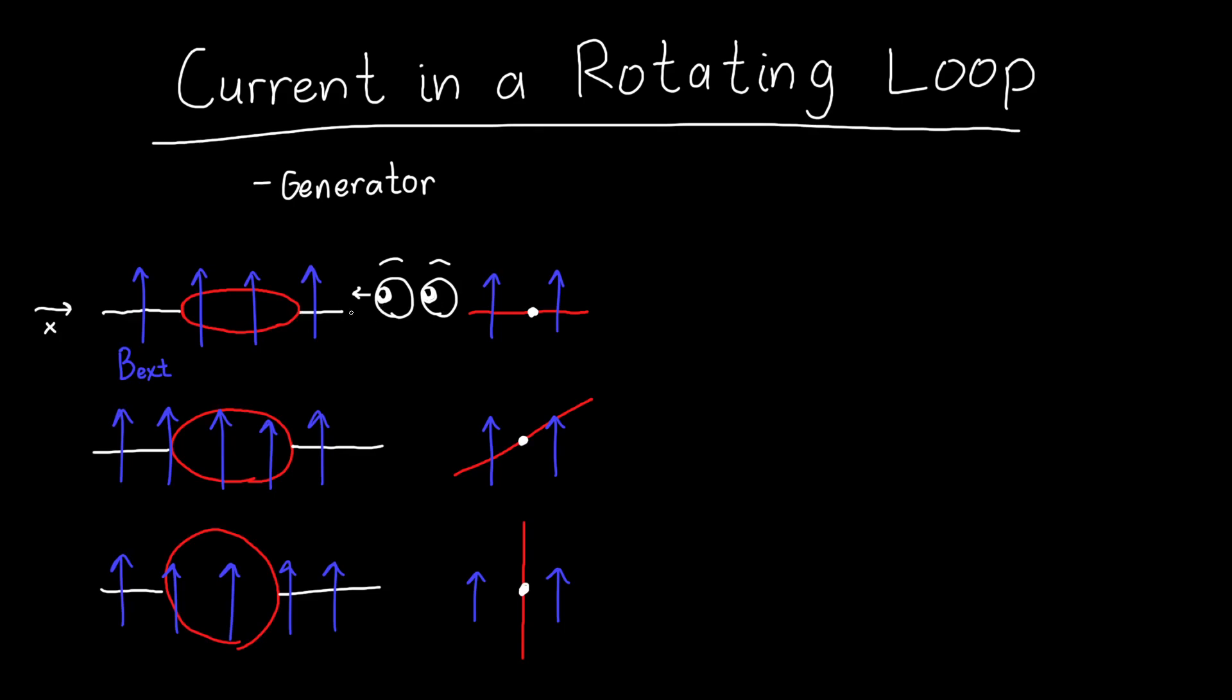So if we look at it from the left, we see that when the loop is at an angle of 0 degrees, it's perpendicular with the magnetic field. And then it gets to a steeper and steeper angle until it becomes parallel with the magnetic field. And it keeps rotating at a speed of omega.